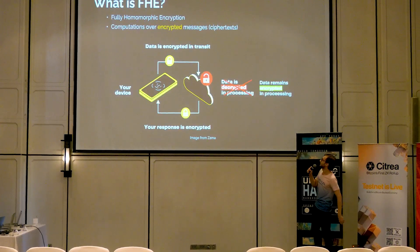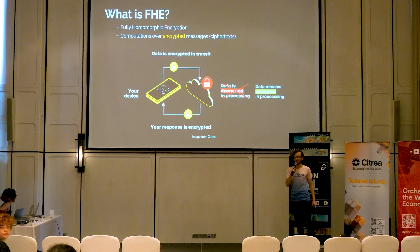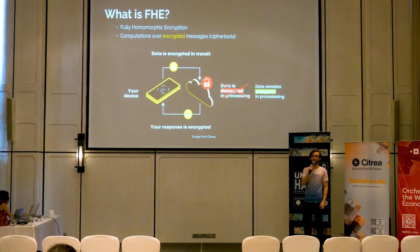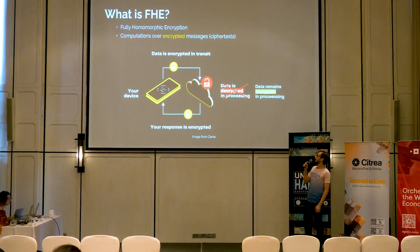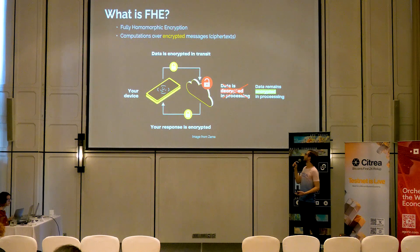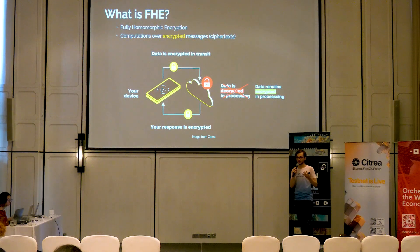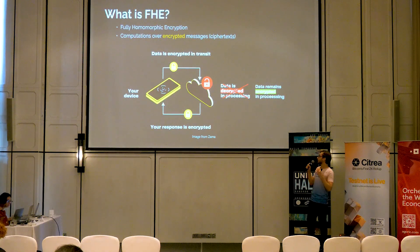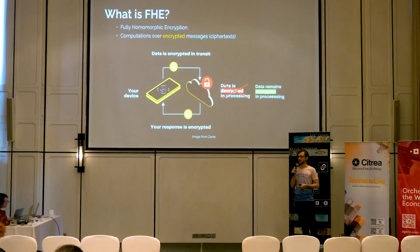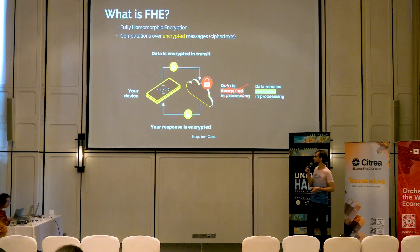I'd like to start with what FHE is. FHE stands for fully homomorphic encryption. Fully homomorphic encryption allows computations over encrypted messages — which means ciphertext. So FHE allows you to do mathematical operations like multiplication and addition on encrypted text without decrypting them.